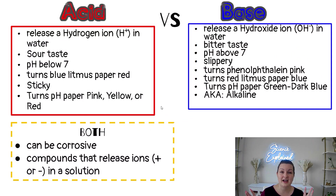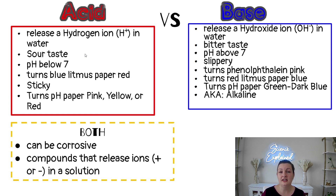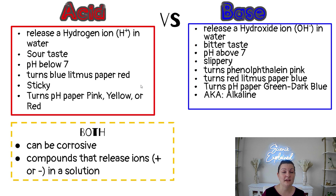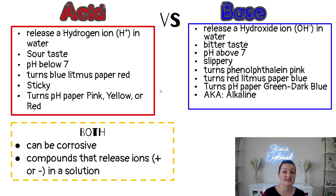Let's compare acids and bases. Acids will release the hydrogen ion H+ in water. They taste really sour. They have a pH below seven — so zero to 6.9. They turn blue litmus paper red, and they're kind of sticky to the touch. They turn pH paper pink, yellow, or red, depending on whether it's a weak or strong acid.